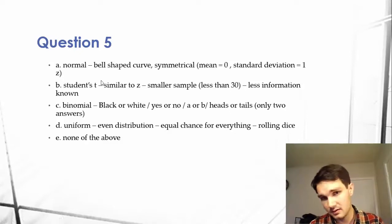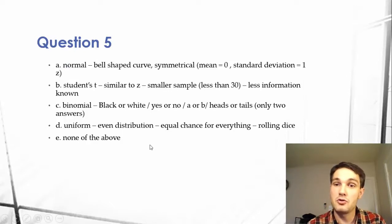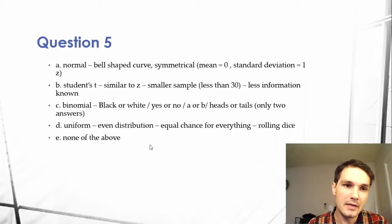Like human beings, human males in America are on average 5'10 to 5'11 or something like that. That would be from a normal distribution standpoint. Well, uniform would be the chance of getting one on a six-sided die is one-sixth. And then there's none of the above.